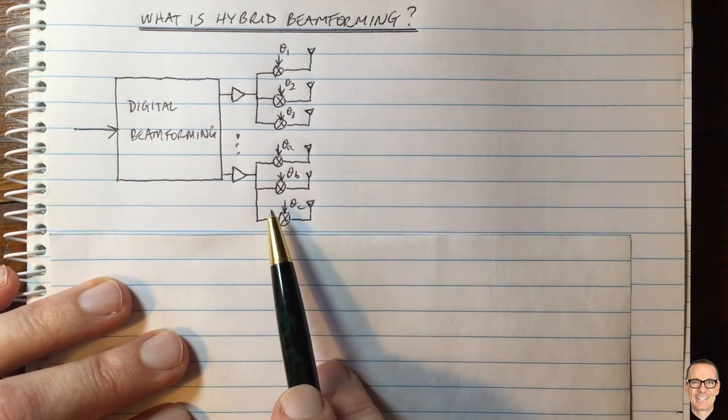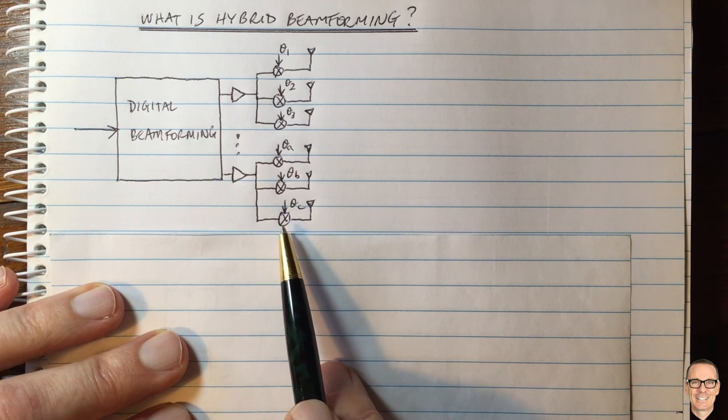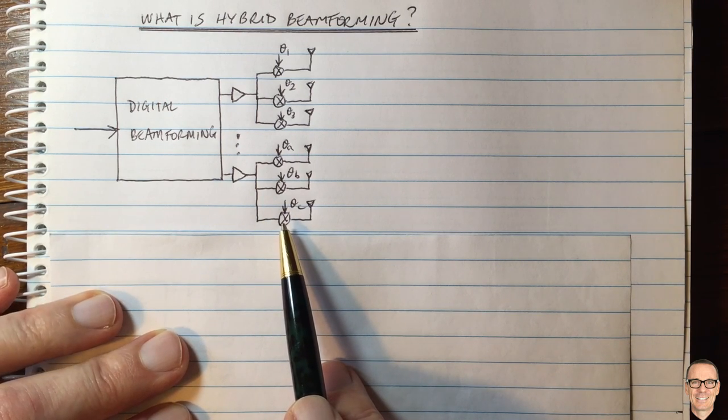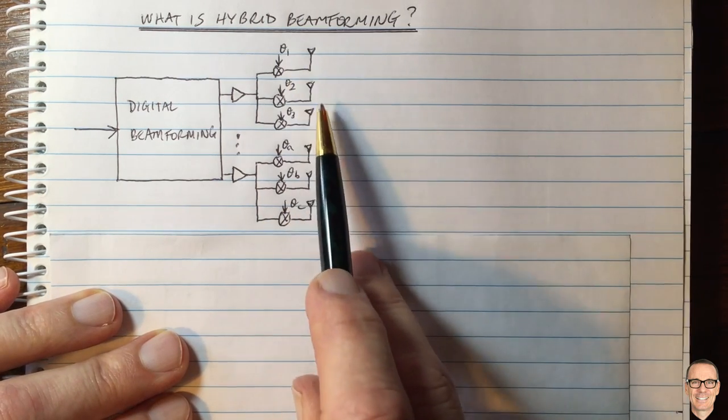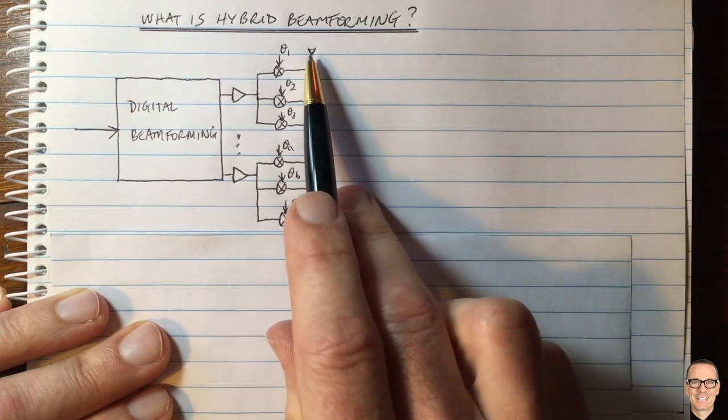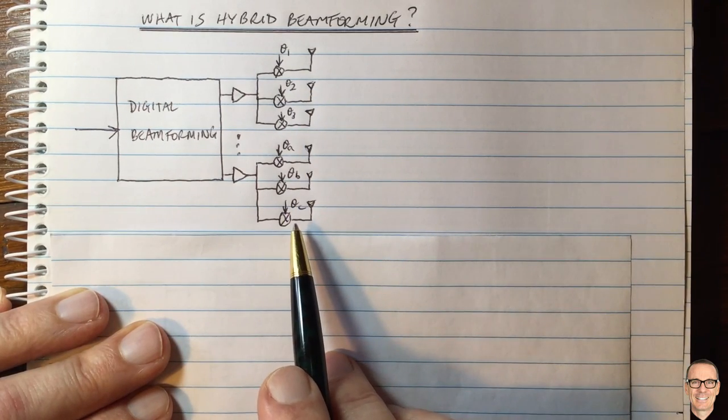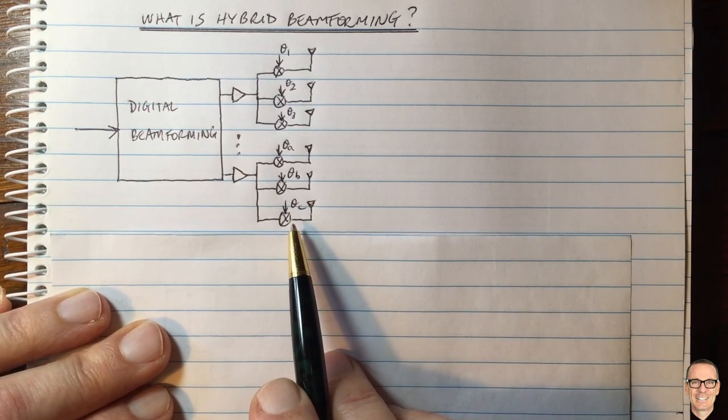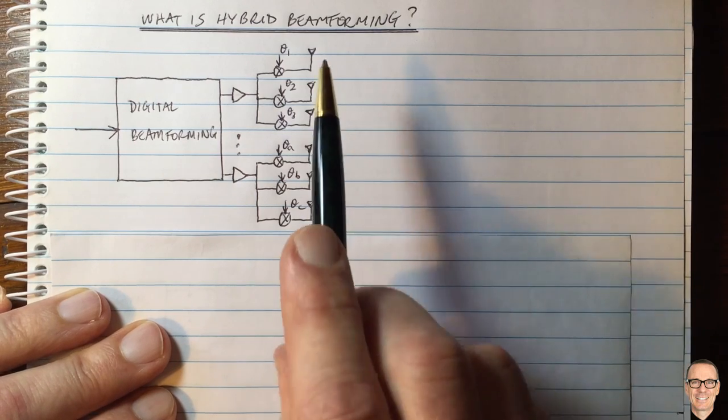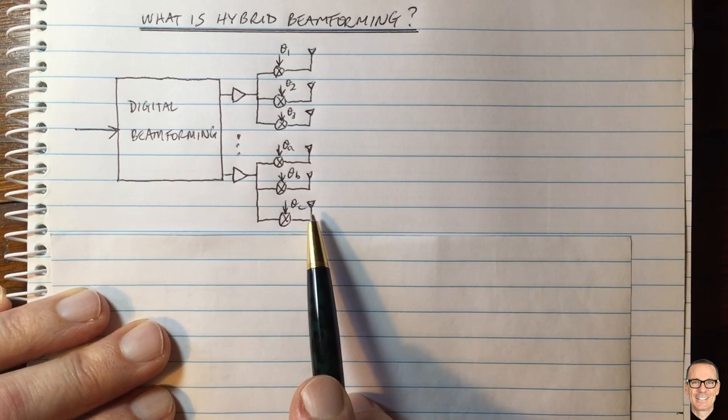Well at millimeter wave frequencies, the higher and higher frequencies, the wavelength is smaller which means the antennas are smaller. So each antenna is not able to radiate as much energy per antenna. That means you need more of them, you need lots of antennas.